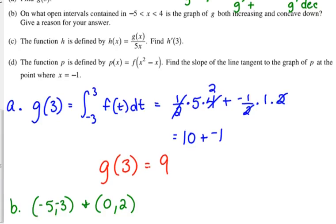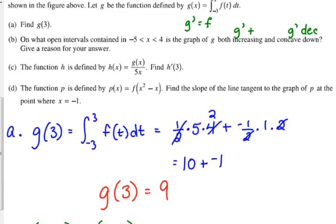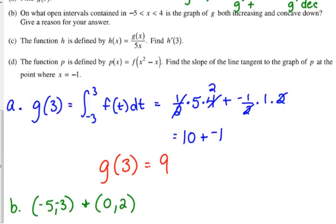It does say give a reason. Their explanation is pretty good, actually. They start the problem by saying g prime is equal to f. And so, g is increasing and concave down between negative 5 and negative 3 and 0 and 2, because g prime equal to f is positive and decreasing on these intervals. That's a good explanation. You just need to write it out in words.